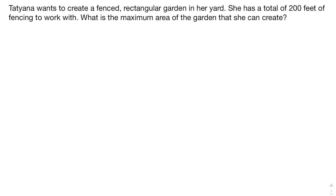Hi, I'm Chris with Sanderson Test Prep. In this video we're going to take a look at an optimization question that's very common for students taking calc. In calc one, when first learning optimization, the fenced garden or fenced portion of a field kind of question is very common. We're going to look at two iterations of that question. The first problem: Tatiana wants to create a fenced rectangular garden in her yard and has a total of 200 feet of fencing.